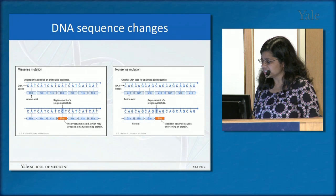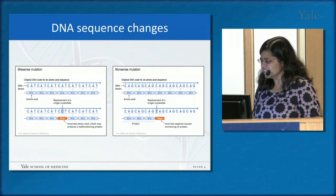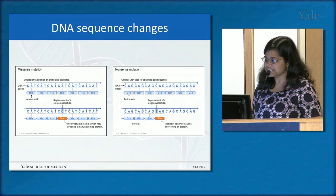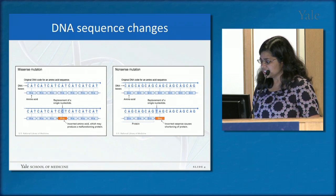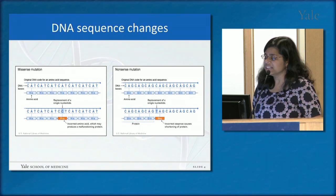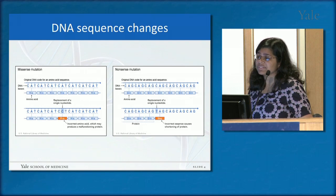Here are some examples of sequence mutations. A missense mutation is where a sequence of nucleotides along the DNA ladder changes. Groups of three nucleotides code for an amino acid — for example, CAT codes for histidine. If a spontaneous, inherited, or induced mutation turns an A into a C, the histidine becomes a proline. Now you have a different amino acid in the middle of that protein chain, which might have no effect or could have a very damaging effect on the protein's structure and function.